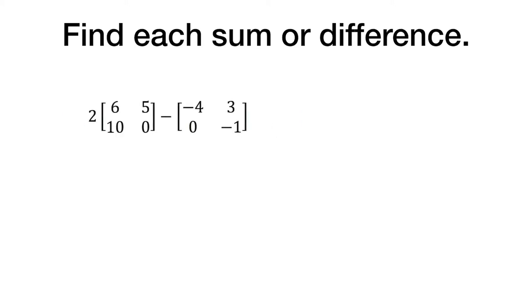Here we have to do one thing before we can go on. Notice that this matrix C is being multiplied by 2. So 2 times 6 is 12, 2 times 5 is 10, 2 times 10 is 20, and 2 times 0 remains 0.